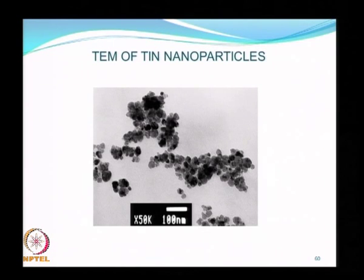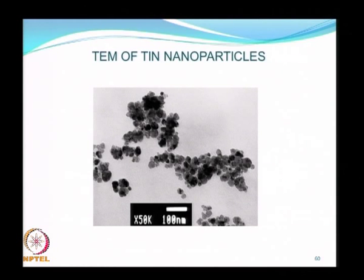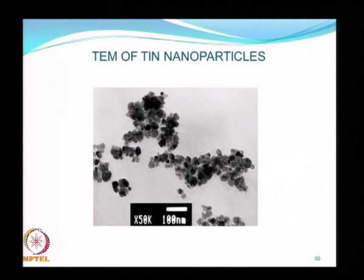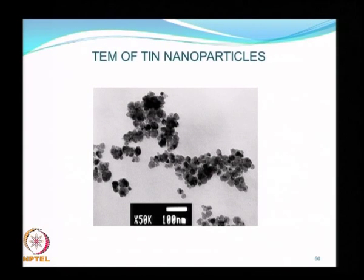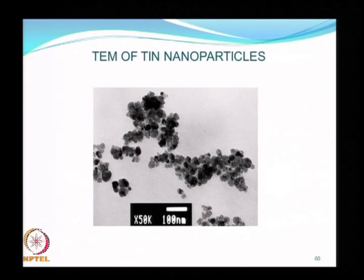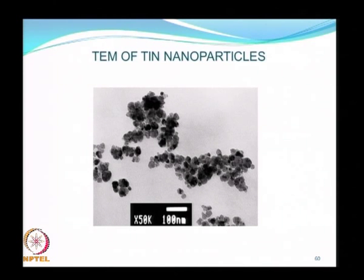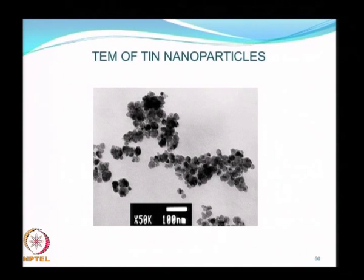TEM pictures of titanium nitride nanoparticles produced by high energy ball milling show the clustering that is happening. This is a good example of characterization using transmission electron microscopy. The resolution is fantastic—you can see particles nanometers in size and resolve particles that are about a nanometer apart. The primary advantage of TEM over scanning electron microscopy is its ability to sensitively detect and resolve particles in the nano size range.